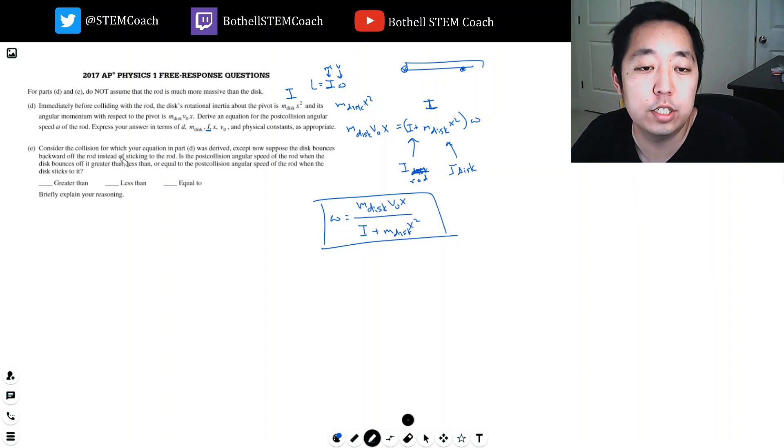Consider the collision for which your equation in part D was derived, except now suppose the disc bounces off backward of the rod instead of sticking to the rod. Is the post collision angular speed of the rod with the disc bounce off greater than, less than, or equal to the post collision angular speed? It's going to be greater because instead of this system where they're both moving together, you're going to have this thing moving that way and the disc moving this way.